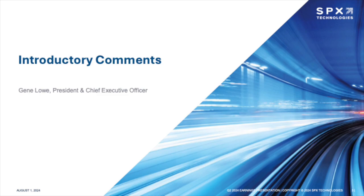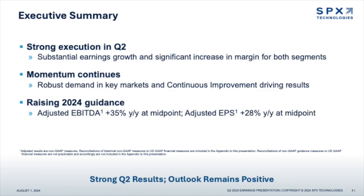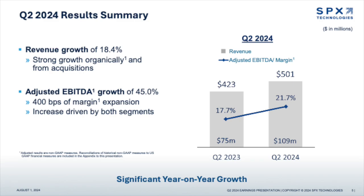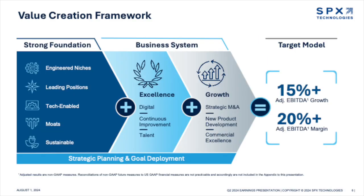With respect to second-half gating, in HVAC, as is typical, we expect Q4 to be our highest revenue and margin quarter, while Q3 revenue is anticipated to be modestly down sequentially due to a large cooling service project we called out in Q2. In D&M, we expect higher margin project revenue to be more weighted to Q3 than Q4. I'll now turn the call back over to Gene for a review of our end markets and his closing comments. Current market conditions support our updated 2024 outlook. Within HVAC, we continue to see strong demand for our cooling products across a broad set of end-market applications, including data centers, healthcare facilities, semiconductor plants, and industrial facilities. In heating, overall demand remains stable, and we're seeing initial traction on climate-conscious solution introductions.